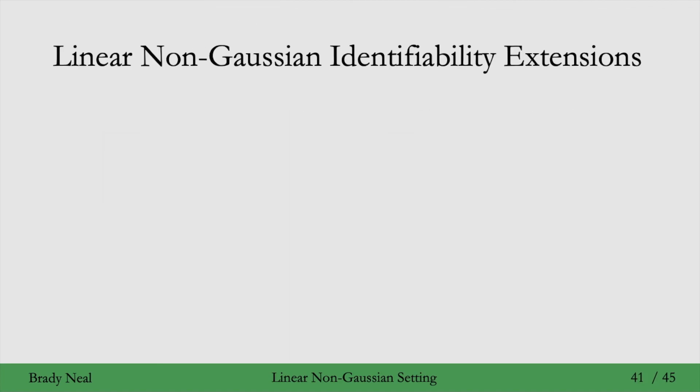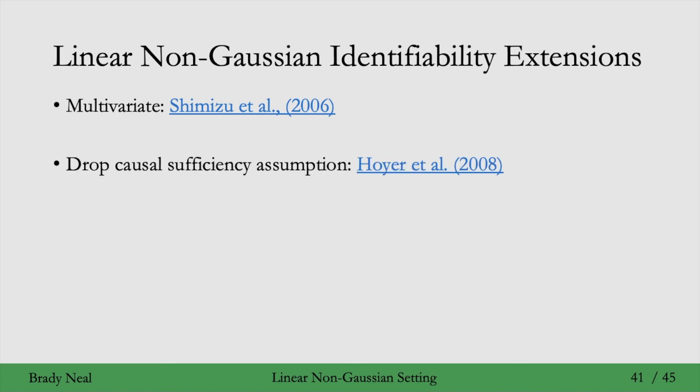There are several extensions to this linear non-Gaussian identifiability result and method. What we're looking at was just for two variables, X and Y, but you can extend it to multiple variables, the multivariate setting. And if you want to drop some assumptions, you can drop the causal sufficiency assumption, that's what they work on in this paper, or drop the acyclicity assumption. That's what they work on in this paper.